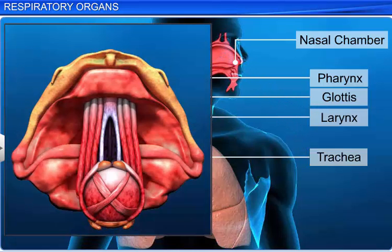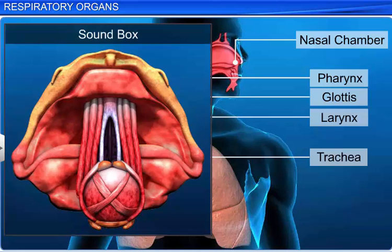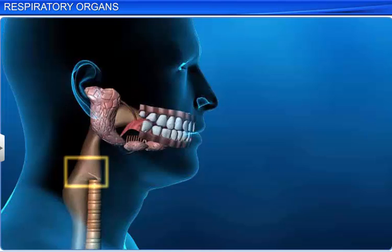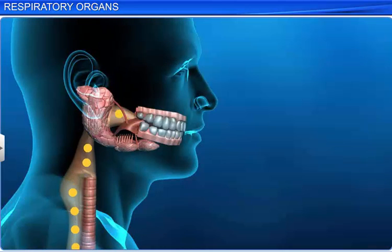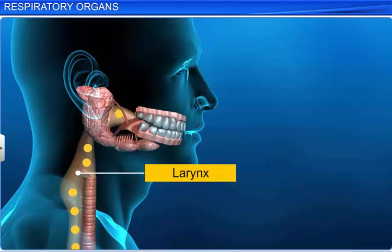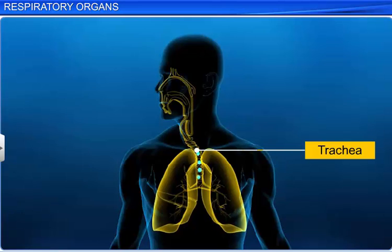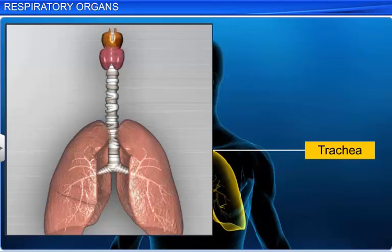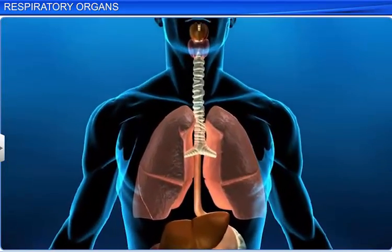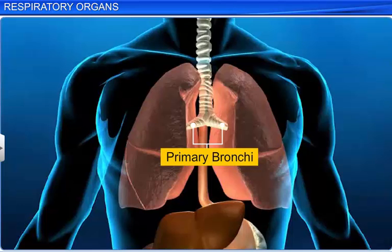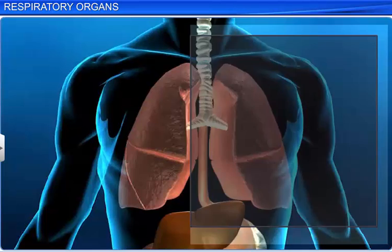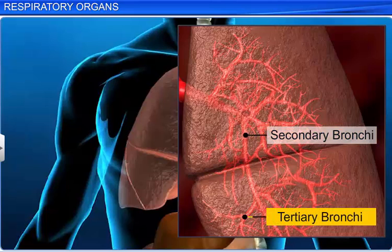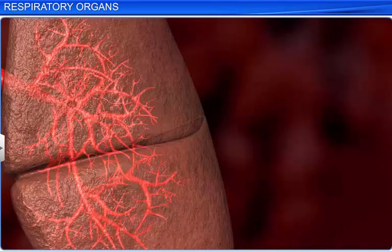The larynx is a cartilaginous box, also called the sound box, because it helps in sound production. The glottis is covered by a thin, elastic cartilaginous flap called the epiglottis, that prevents the entry of food into the larynx. The trachea is a tubular passage that allows air into the lungs. It is made of C-shaped cartilaginous rings and is divided into two branches called primary bronchi. Each primary bronchus undergoes repeated divisions to form the secondary and tertiary bronchi, ending up in very thin terminal bronchioles.